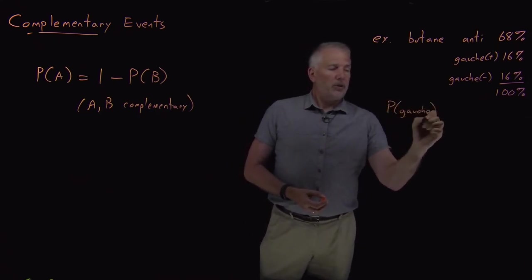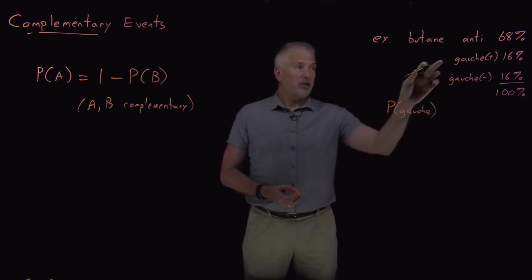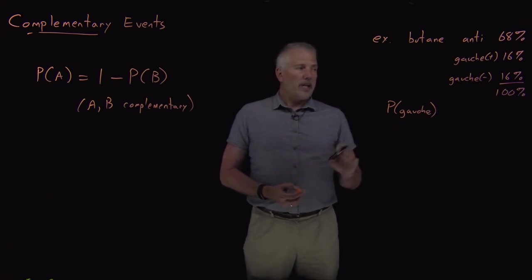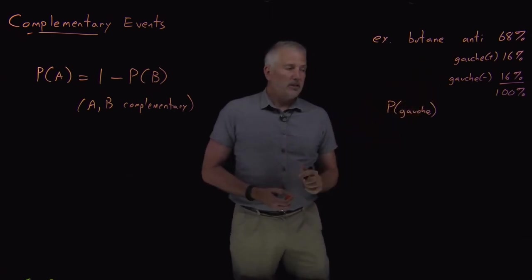If I want to know what the probability is that the molecule is in a gauche, either one of the two gauche confirmations, either gauche plus or gauche minus, when we talked about mutually exclusive events, we thought of that as an or problem and we summed these two results.